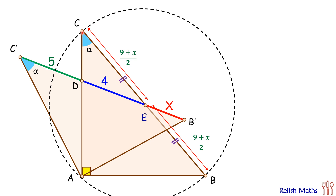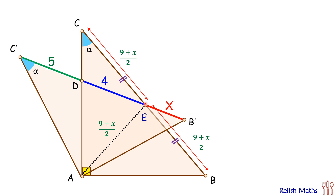E is the midpoint of this diameter, so E is the center. We can say that CE is the radius of this circle, and AE is also the radius. Since CE is (9 plus x) by 2, AE will also be (9 plus x) by 2. In triangle CEA these two sides CE and EA are equal, so the angles opposite to them will be equal — if this angle is alpha, then this angle here will also be alpha degrees.